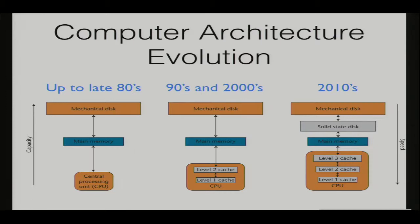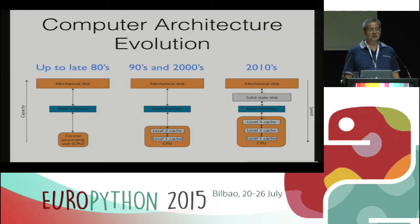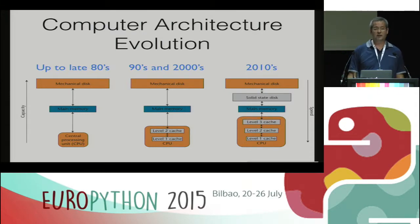If we look at the evolution of architectures, in the 80s the memory architecture of computers was very simple — just a couple of memory layers, then the main memory and the mechanical disk. Then, in the 90s or 2000s, vendors realized this mismatch problem between memory and CPU speed, and they started to introduce two additional levels of cache in CPUs. And nowadays, in this decade, it's very usual to have up to six layers of memory. This is a big change in the paradigm — it is not the same thing to program for a machine in the 2010s as for a machine in the 80s.